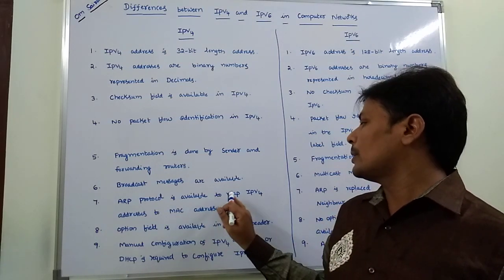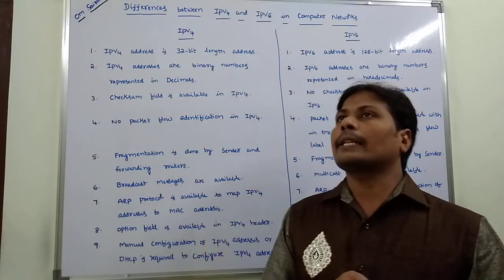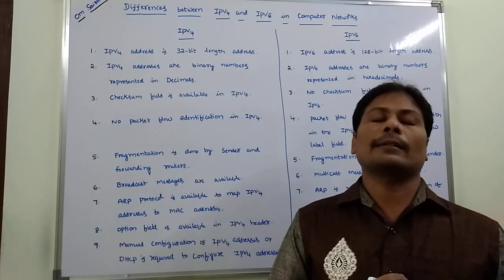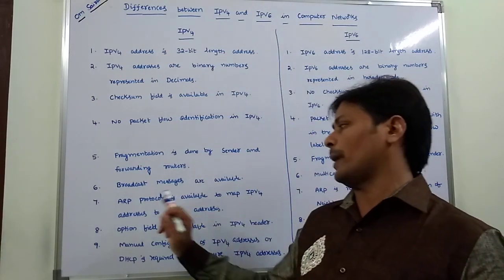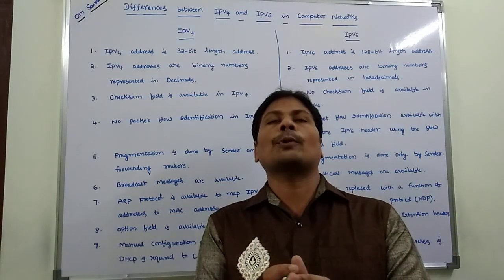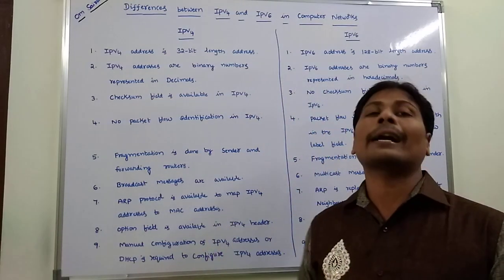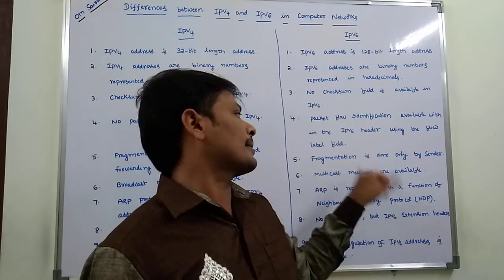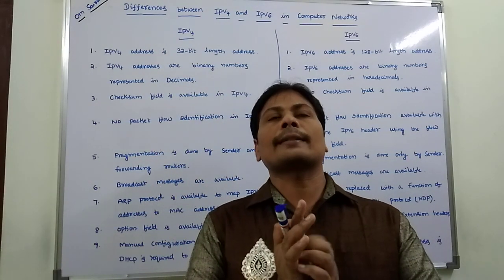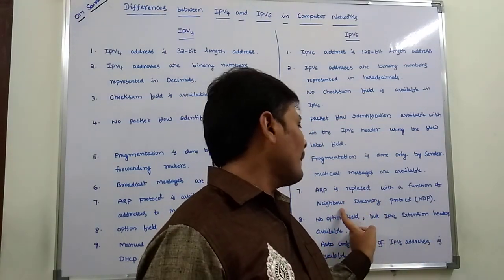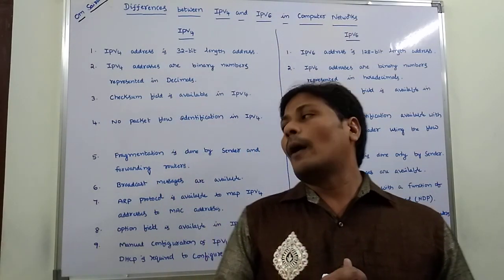Seventh point: ARP protocol — Address Resolution Protocol — is available to map IPv4 addresses to MAC addresses. By using ARP, we convert IPv4 addresses to MAC addresses. But in the case of IPv6, ARP is replaced with NDP — Neighbor Discovery Protocol. By using this protocol, we convert IPv6 addresses to MAC addresses.